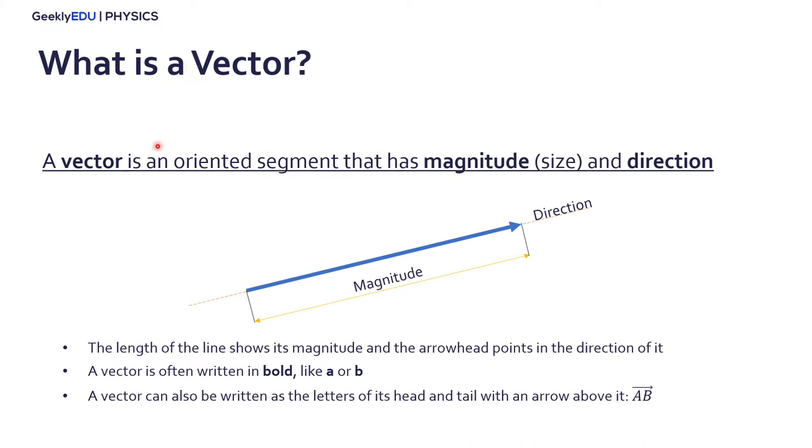A vector is an oriented segment that has magnitude, which is its size, and a direction. If you look at the example here, the length of the line shows its magnitude and the arrowhead points in the direction of it. A vector is often written in bold, like a or b, but it can also be written as the letters of its head and tail with an arrow above it.